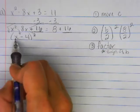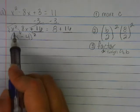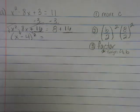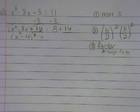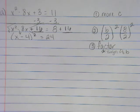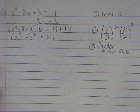If we foiled X minus four times X minus four, I'm going to get X squared minus 8X plus 16 equals what? 24. Process that for a minute.